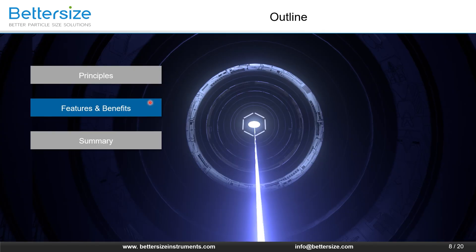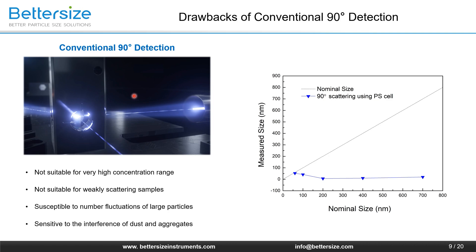After understanding the principles, let's move on to the features and benefits. There are some drawbacks of the conventional 90-degree optics. For example, the 90-degree optics is not suitable for high concentration range, nor for weakly scattering samples. In addition, this optics is susceptible to number fluctuations of large particles and also sensitive to the interference of dust and aggregates within the samples. When measuring a size standard sample at its original concentration, the 90-degree optics can provide a value close to the certified value, suggesting its limited concentration range.